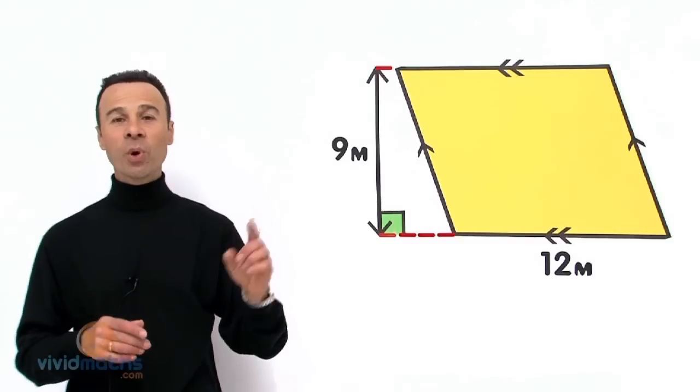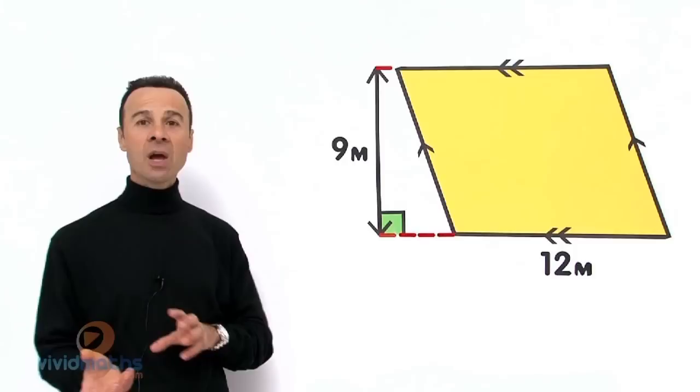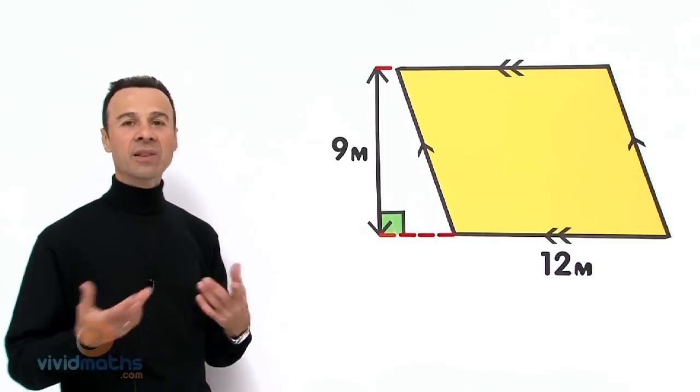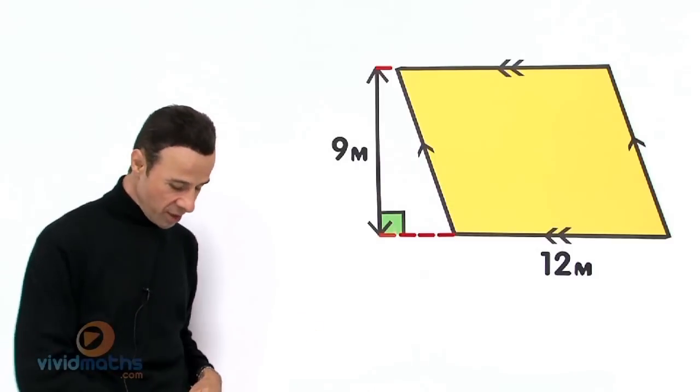So we're going to take it in two steps. Step number one: write up the formula for the area of a parallelogram. And step number two: substitute and drop the numbers in there, the base and the height, and then multiply so we can come up with the final area. So let's do this.